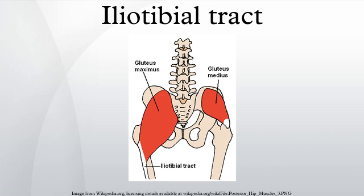The iliotibial tract, or iliotibial band, is a longitudinal fibrous reinforcement of the fascia lata. The action of the ITB and its associated muscles is to extend, abduct, and laterally rotate the hip. In addition, the ITB contributes to lateral knee stabilization.